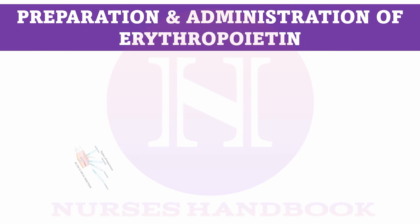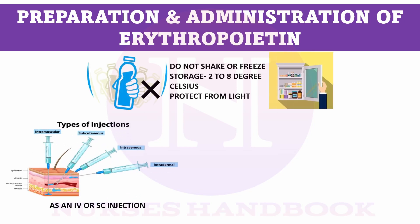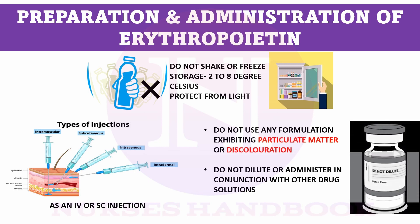Now let us discuss the preparation and administration of this drug. It may be given either intravenously or subcutaneously. Do not shake or freeze. Rather, it should be stored at a temperature ranging from 2 to 8 degrees Celsius and kept away from sunlight. If the preparation has any particulate matter or discoloration, it should not be used. This injection should not be diluted with any other drugs or solutions.